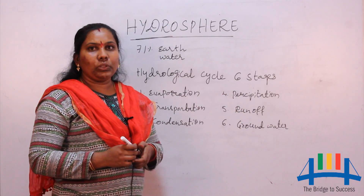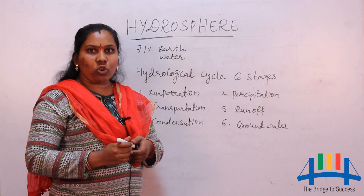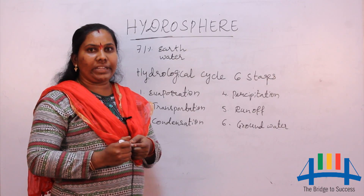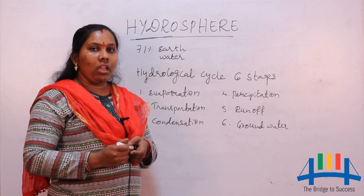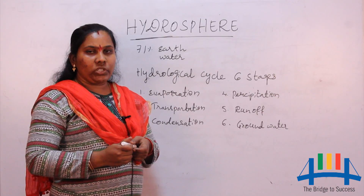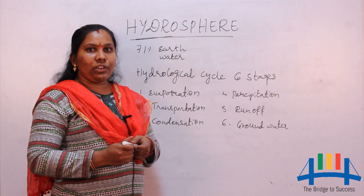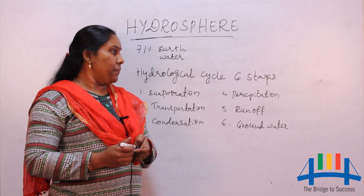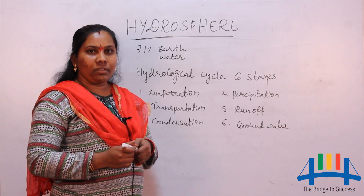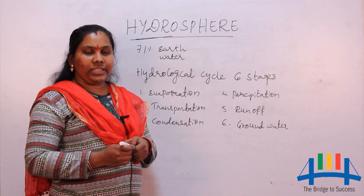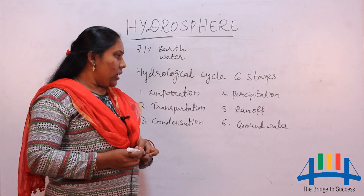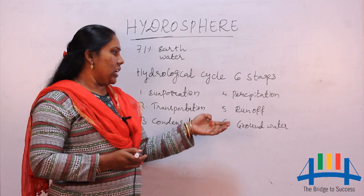The fourth stage is precipitation. Those tiny droplets of water formed after condensation reach the Earth again in liquid form. It can be in the form of rain, sleet, or snow.